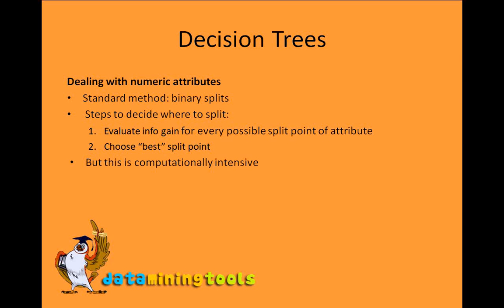The first thing we are going to deal with is numerical attributes. The standard method is to go ahead with binary splits. You arrange numerical attributes in increasing or decreasing order, divide them into two halves, evaluate the info gain for every possible split point of the attribute, and then choose the best split point.